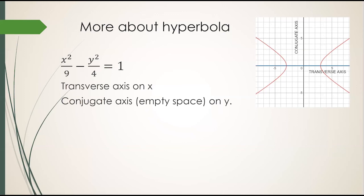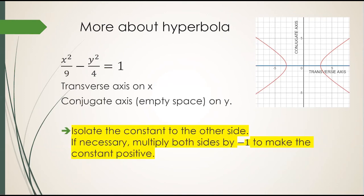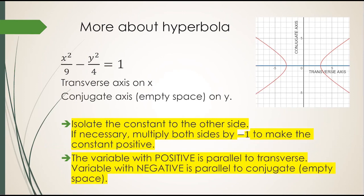But first, I need to make my non-standard form come close to the standard form. And the standard form has a constant 1 by itself on one side, so I need to do that on my non-standard form. First, I isolate the constant to the other side and make sure it's positive. We're trying to make it look like the number 1, positive 1, in the standard form. If necessary, multiply both sides by negative 1 to make the constant positive. Once you've done that, the squared variable with positive coefficient is parallel to the transverse. Whereas the squared variable with the negative coefficient is parallel to the conjugate or the empty space.